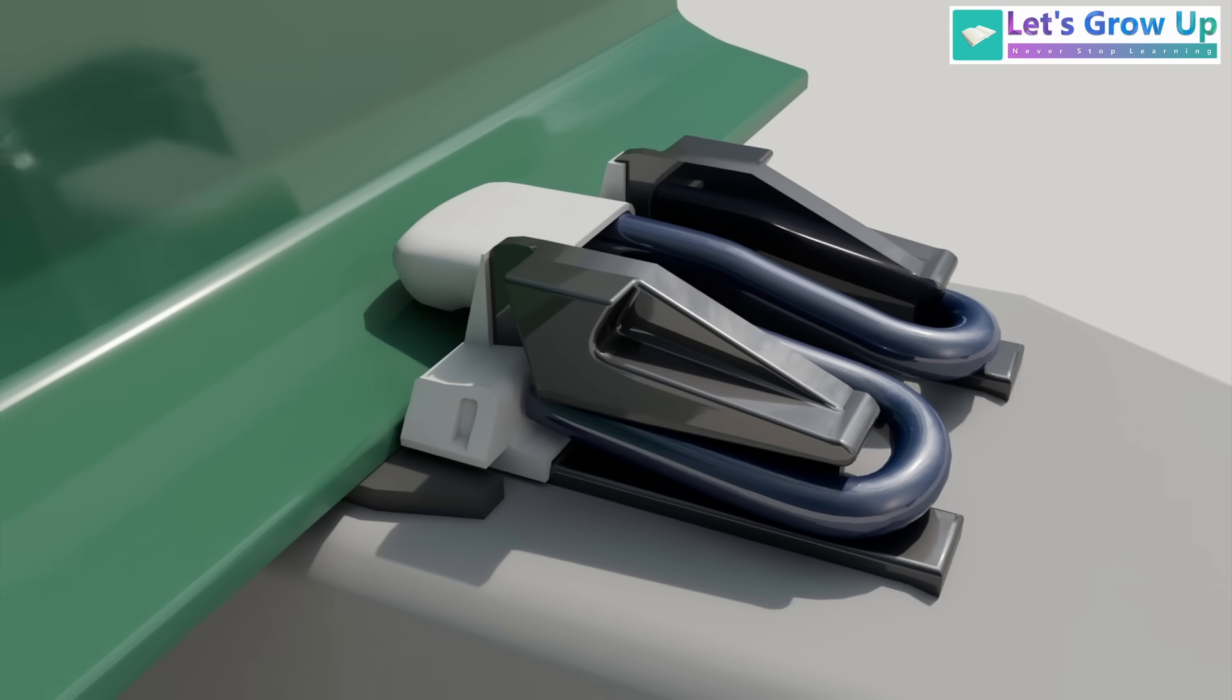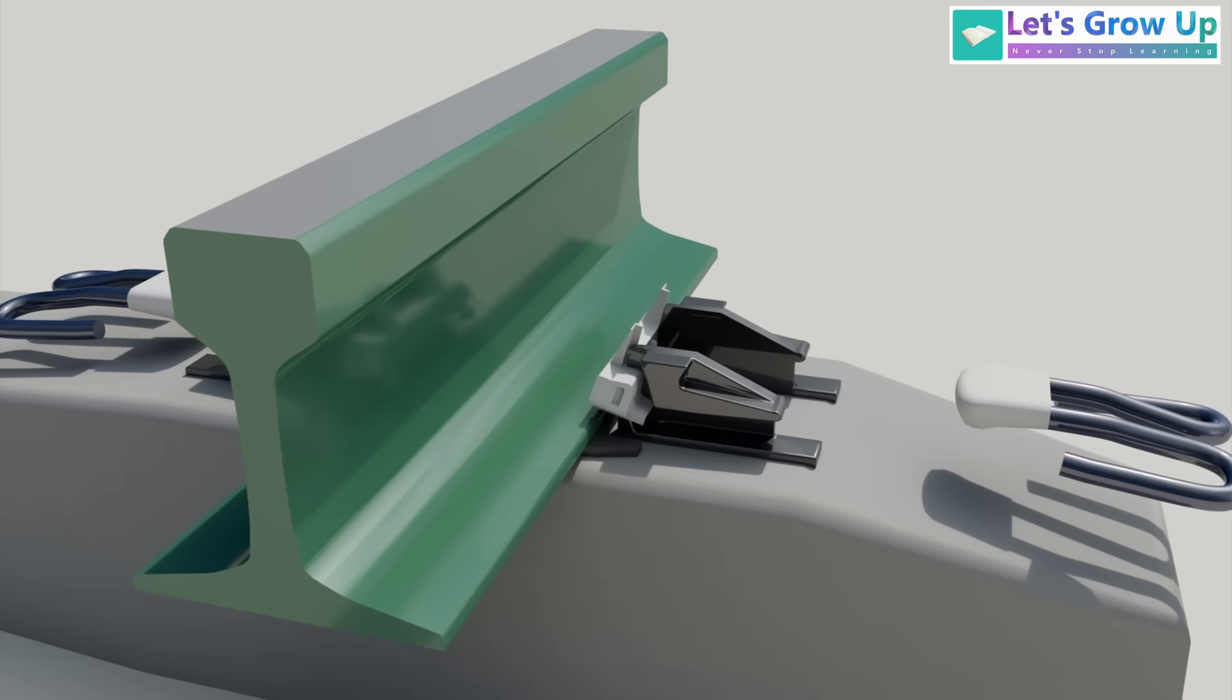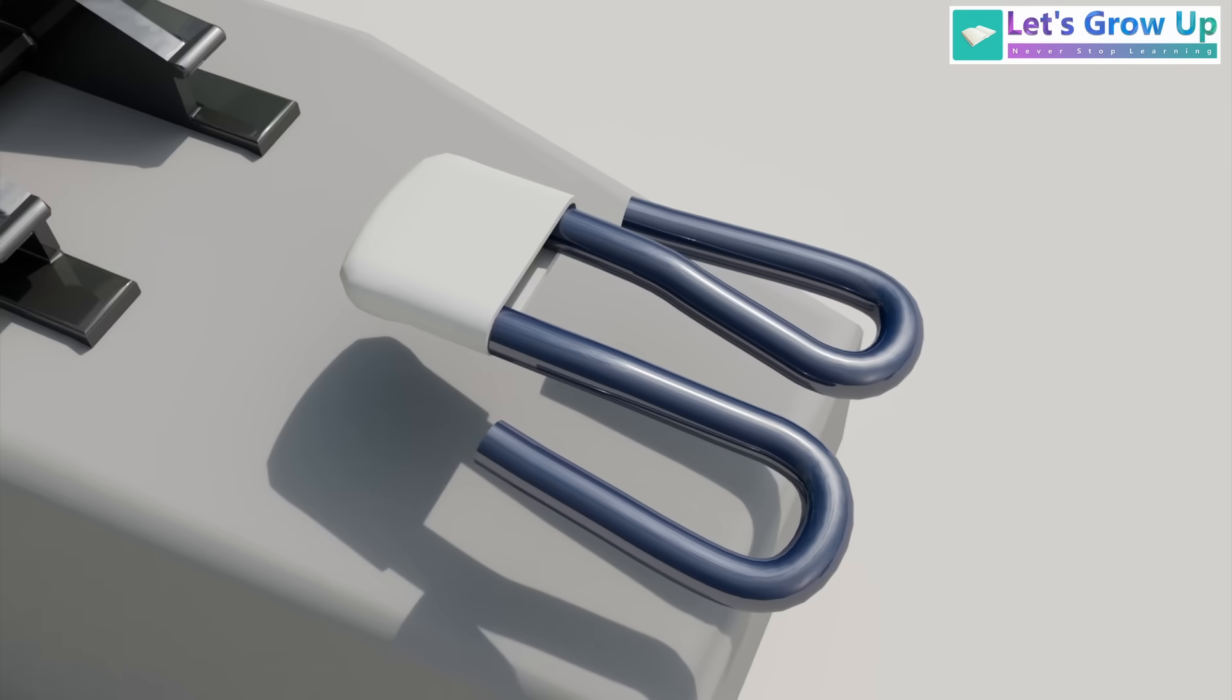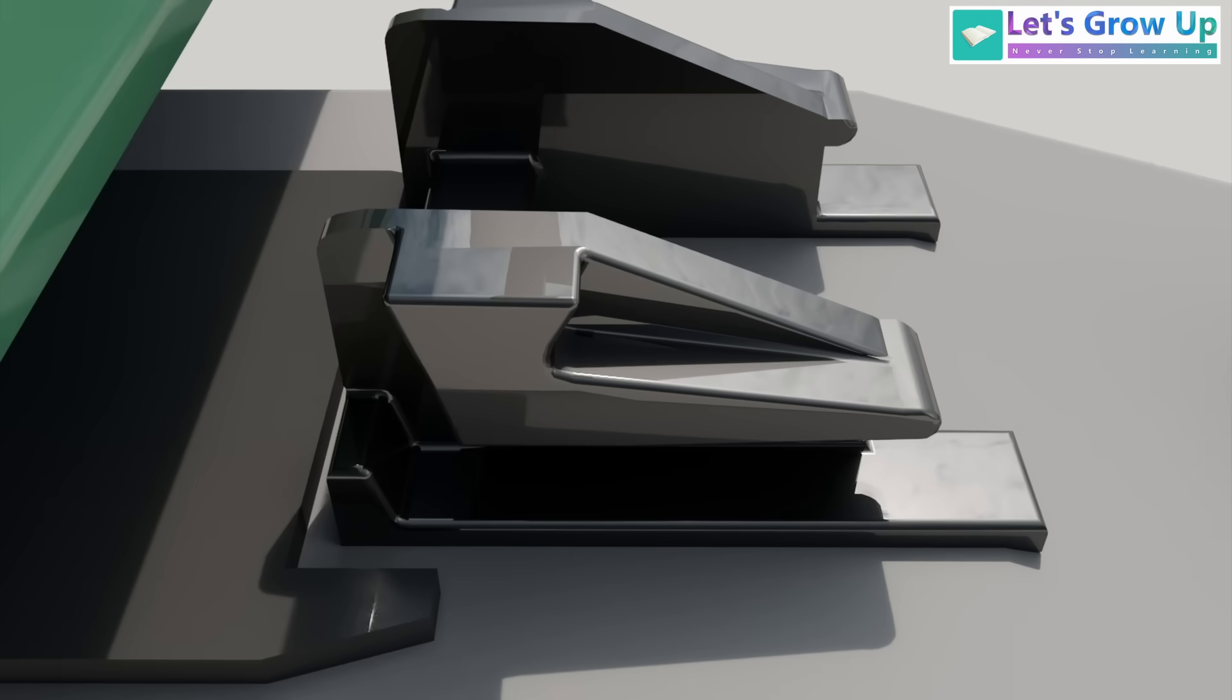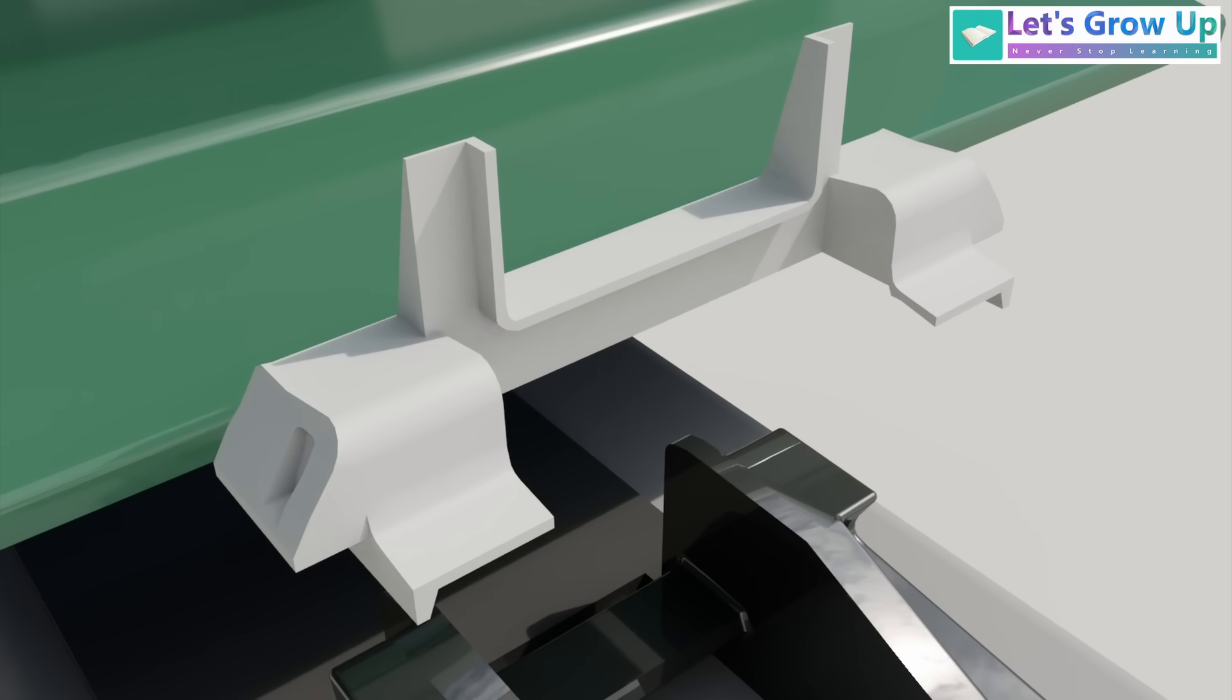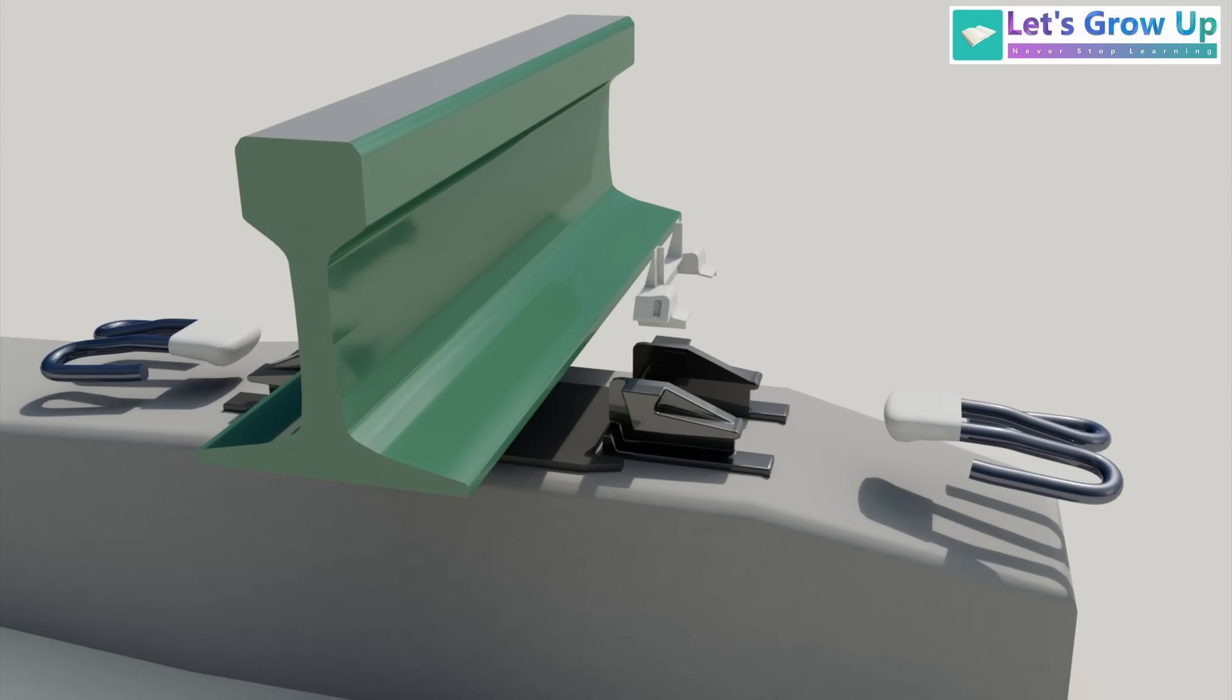The Fast Clip or FC Fastening System is a highly engineered assembly designed for resilience and stability. Its key components include the Fast Clip itself, a cast iron shoulder which is a fixed component embedded in the concrete sleeper that provides the anchor point for the clip, a rail insulator or toe insulator, and a rail pad placed between the rail and the sleeper to absorb shock and vibration.